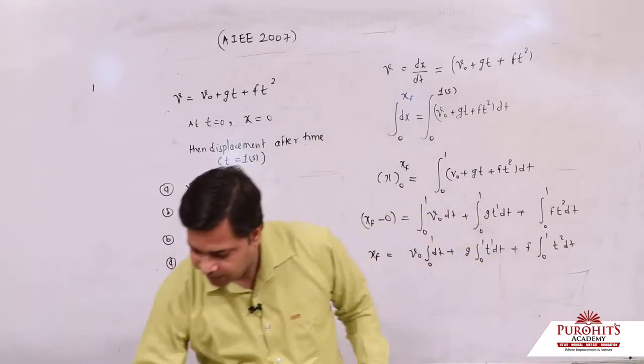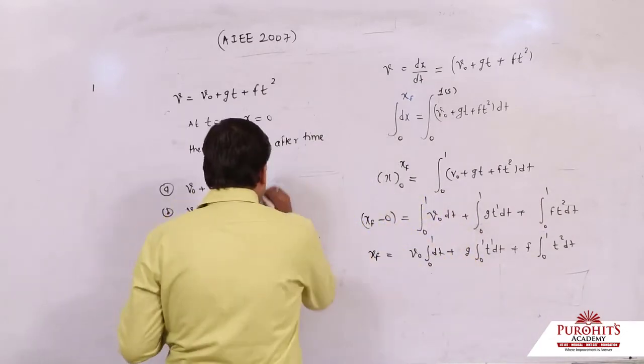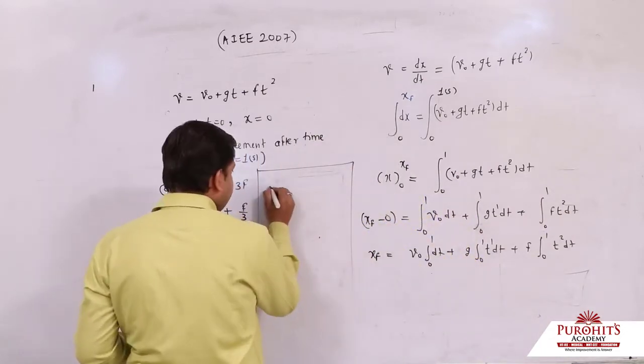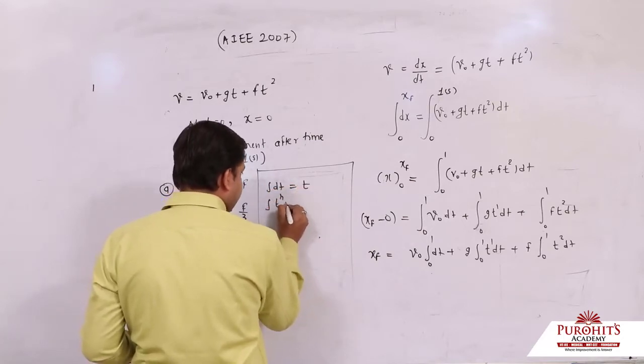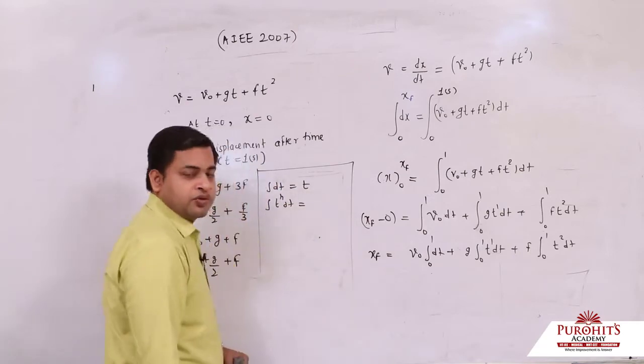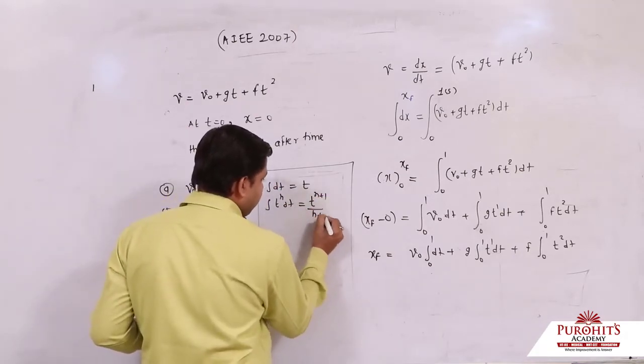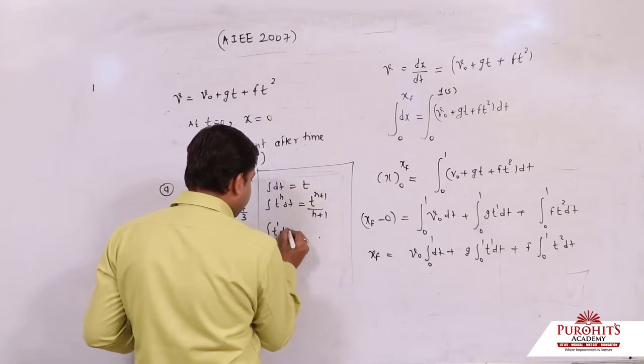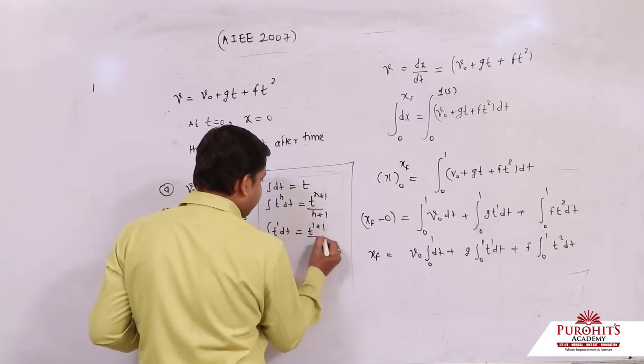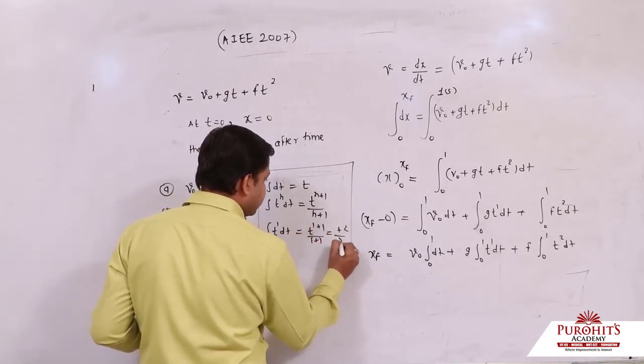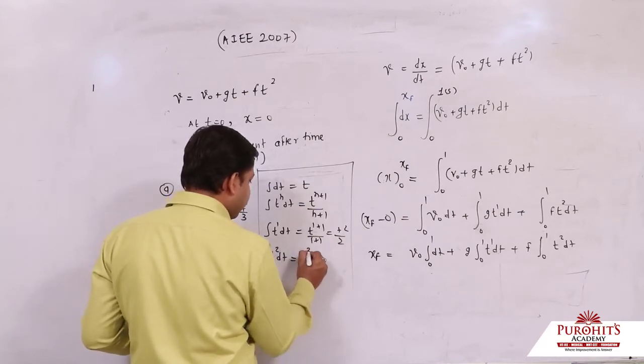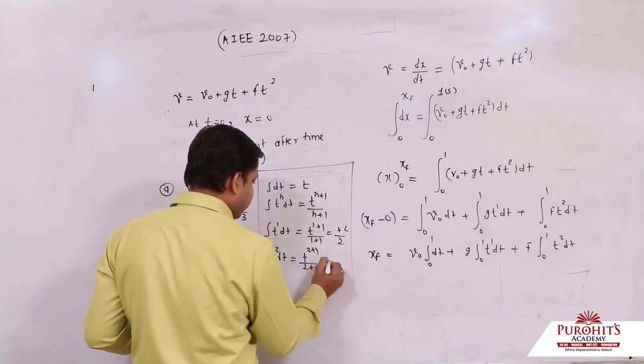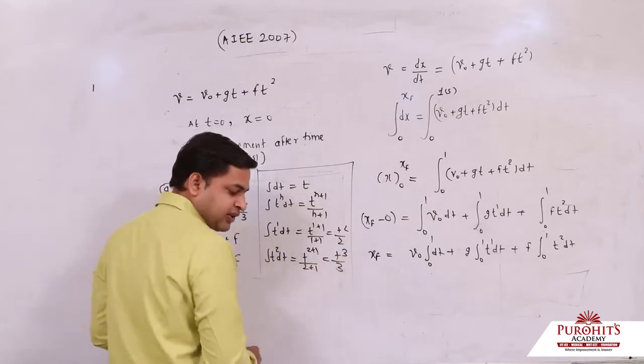So I'll show you. I've discussed this before and I'm discussing it again. Integration dt is t. Integration t to the power n dt is written as t to the power n plus 1 upon n plus 1. So t to the power 1 dt can be written as t to the power 1 plus 1 upon 1 plus 1, which is t square by 2. t to the power 2 dt can be written as t to the power 2 plus 1 upon 2 plus 1, which is t cube by 3. This is how it can be written.